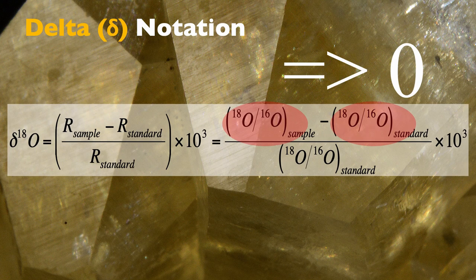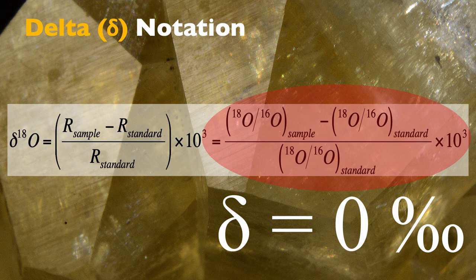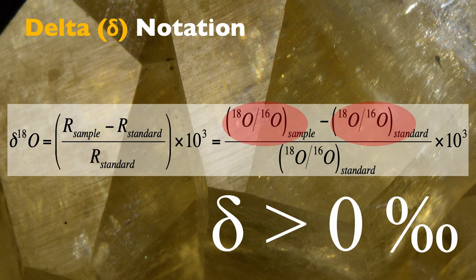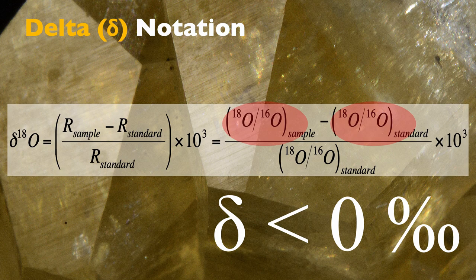Let's think about the implications of this notation. If your sample and your standard are the same, the numerator comes to zero and the whole Delta value is zero. If the sample has more O18 than the standard, the numerator is positive and the Delta becomes positive. If the sample has less O18 than the standard, the numerator is negative and the Delta value is less than zero. In other words, the Delta is exactly what its name implies — a difference between the sample and the standard. Negative values mean you're below the standard; positive values mean you're above it.